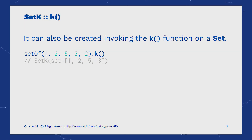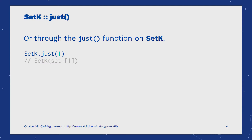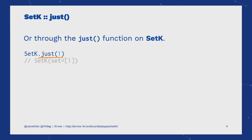There is also a convenient K function available that can be called over the Set interface. Or you can get a SetK by invoking the SetK.just method. This method expects only one parameter and will return a SetK of just one element.